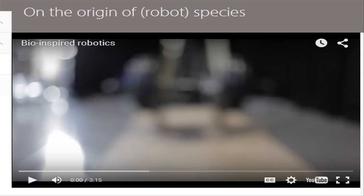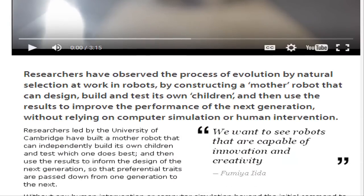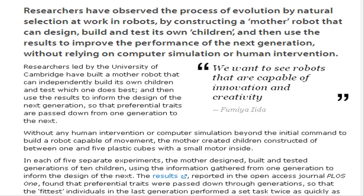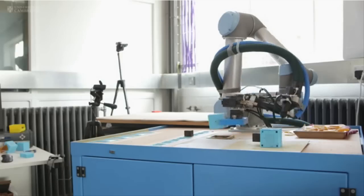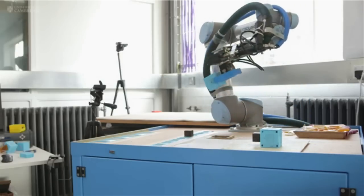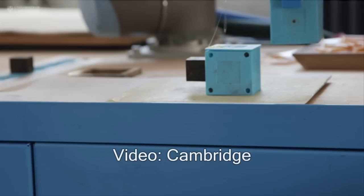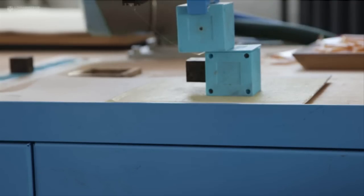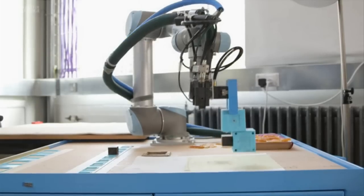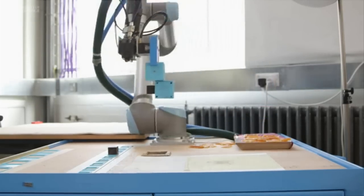Researchers have observed the process of evolution by natural selection at work in robots, by constructing a mother robot that can design, build and test its own children, and then use the results to improve the performance of the next generation, without relying on computer simulation or human intervention.